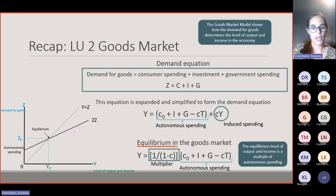You can draw the demand equation on a diagram, with the x-axis showing demand for goods and the y-axis showing level of output and income. Autonomous spending is the intercept, and the marginal propensity to consume gives the slope of the curve. The equilibrium point shows where demand for goods equals the level of output and income.